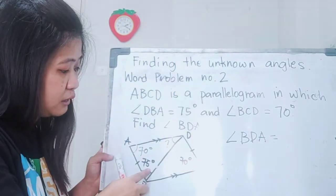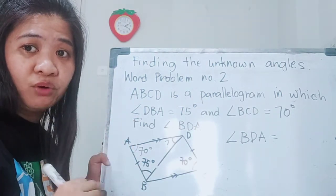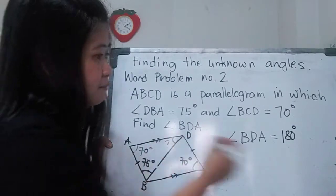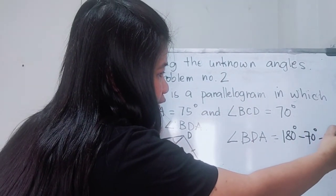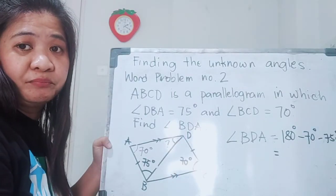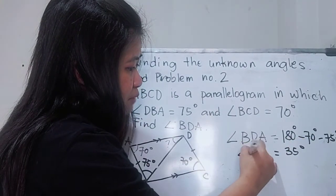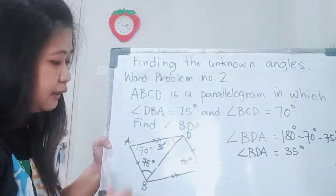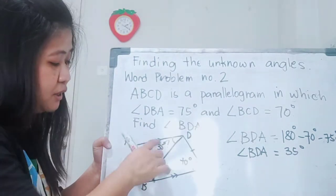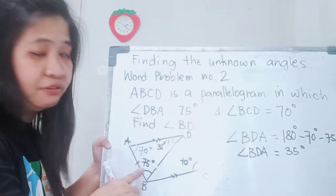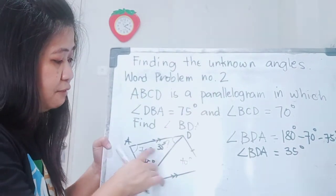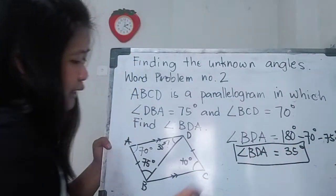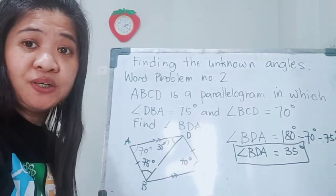It's very easy. Because this is a triangle, and the three angles of a triangle add up to 180 degrees. Therefore: 180 degrees minus 70 degrees minus 75 degrees. The answer is 35 degrees. So angle BDA is equal to 35 degrees. To check: 70 plus 75 equals 145, plus 35 equals 180 degrees. We got the answer correct.